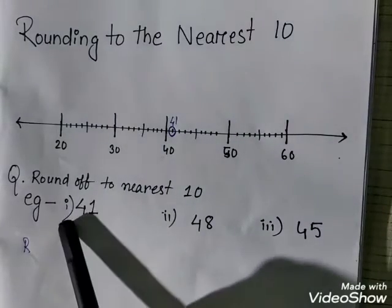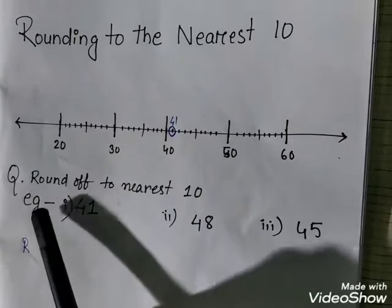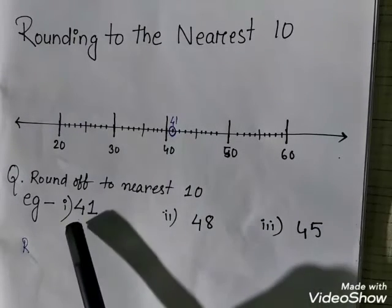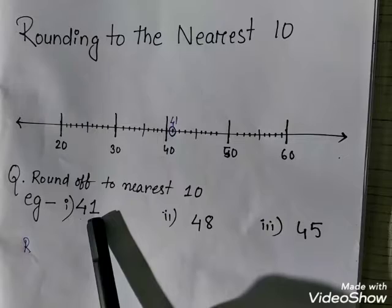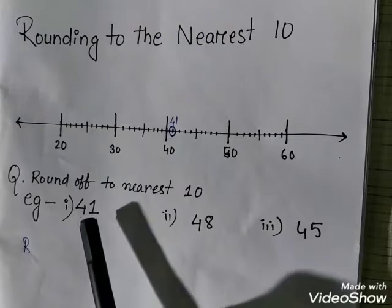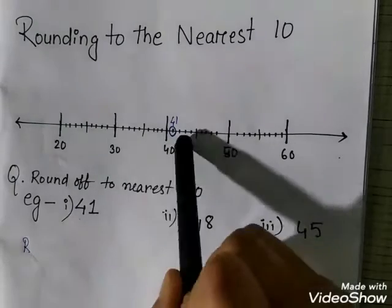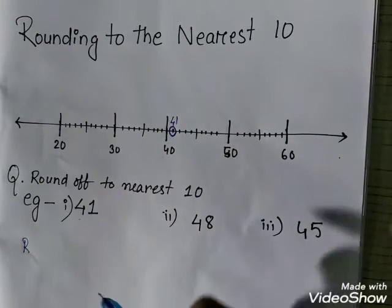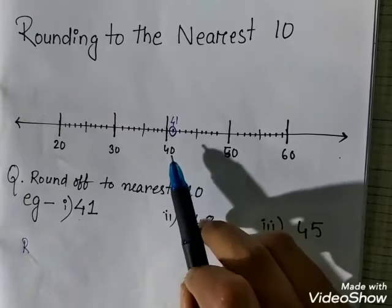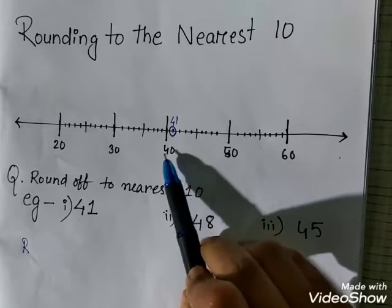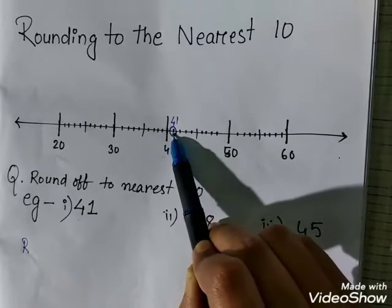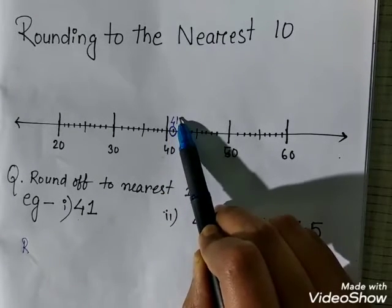Let me show you with some examples. The question is: round off to the nearest 10. The first example is 41 — we have to round off 41 to the nearest 10. On the number line, 41 is located at 40 and then one dot further, so it sits just after 40.